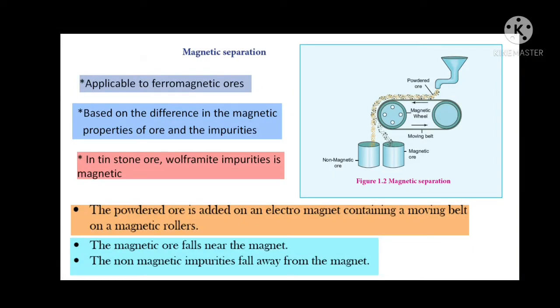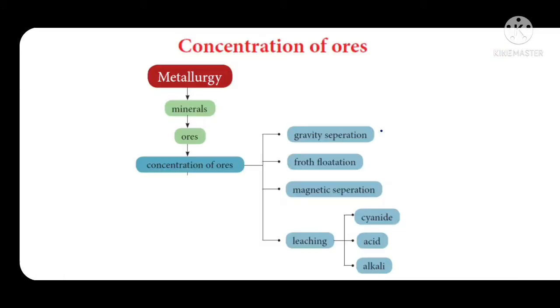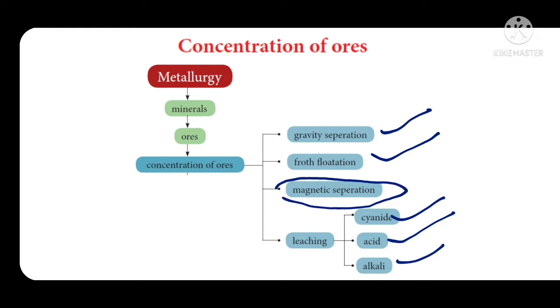Good morning students. In concentration of ore, the remaining heading is magnetic separation. We have already finished gravity separation, flotation process, and leaching — including cyanide leaching, acid leaching, alkali leaching, and ammonia leaching. The remaining one is magnetic separation, so today we are going to learn about magnetic separation.